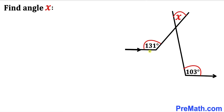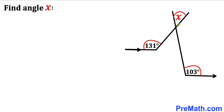Welcome to pre-math. In this video we have got two parallel lines such that two other crossing lines make an angle of 131 degrees and the other one is 103 degrees respectively. Now we are going to calculate this angle x.